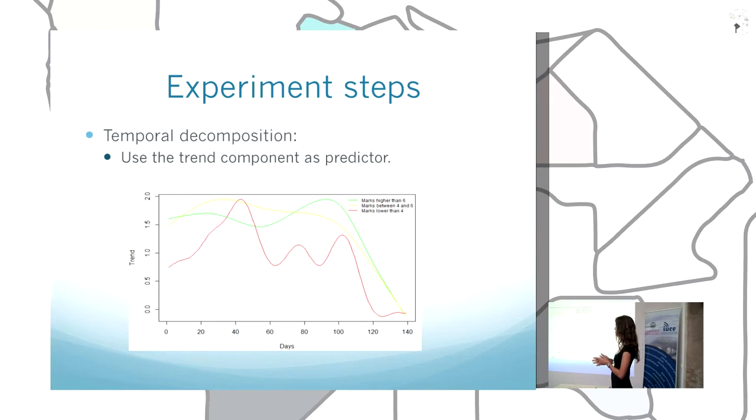So the trend component can be used as a predictor of the results. For example, if one student has a trend component similar to the red one, it's probable that these students are going to fail the subject.